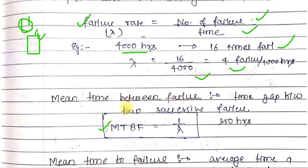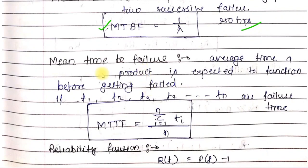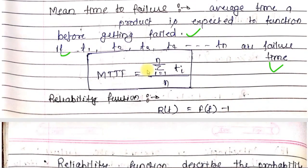If you want to find the mean time between failures (MTBF) - what is the time gap between two failures - you need to calculate MTBF, which is the reciprocal of lambda. For example, the reciprocal of 1/4 would be 2000 hours. Next term is mean time to failure (MTTF) - the average time a product is expected to function before getting failed. Here t1, t2, t3, t4 to tn are the failure times. The formula for MTTF is sigma (i=1 to n) ti/n.